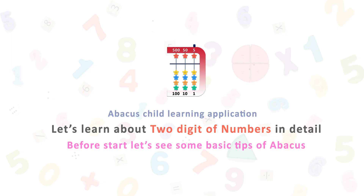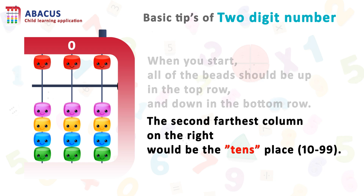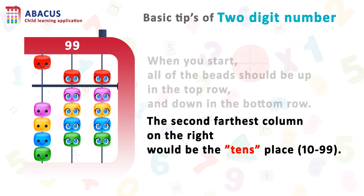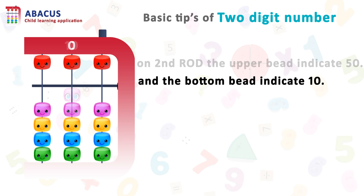Let's start. Before we start, let's see some basic tips of the Abacus. When you start, all of the bits should be up in the top row and down in the bottom row. The second farthest column on the right side is the tens place. On the second rod, the upper bit indicates the value of 50 and the bottom bit indicates the value of 10.